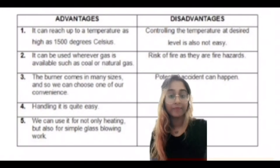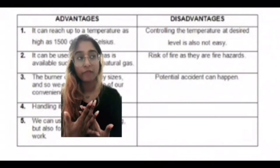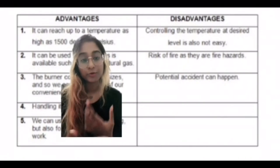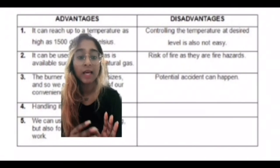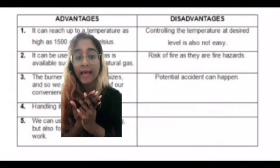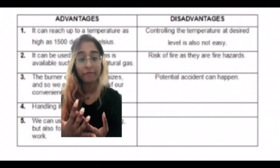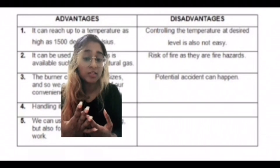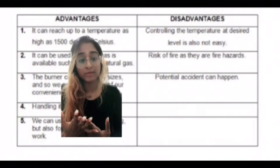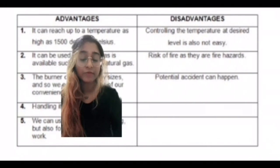The disadvantages of using a Bunsen burner is that controlling the temperature at its desired level is not easy. There is always a risk of fire hazards since they produce an open flame and burn at very high temperature. And hence, always be careful when using them to prevent potential accidents from happening.